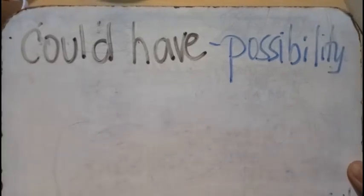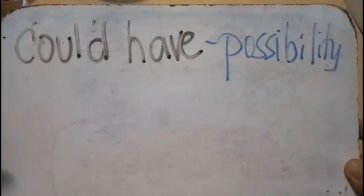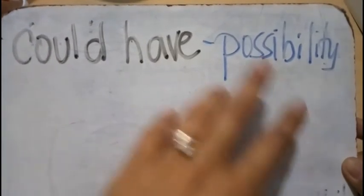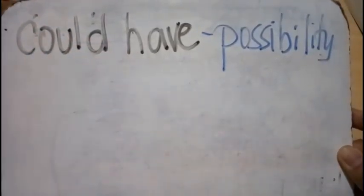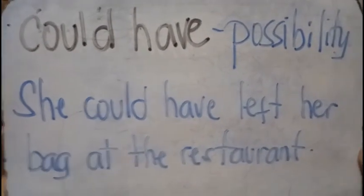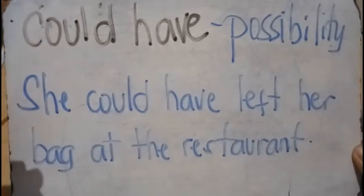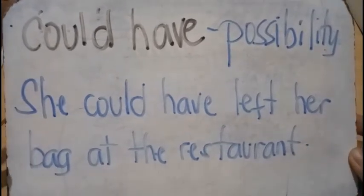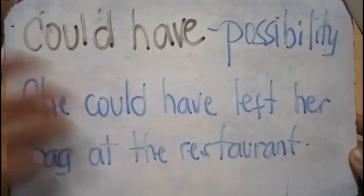The last modal is could have, and we also use it for possibility — when something could have happened in the past, but you're not sure. Example: 'She could have left her bag at the restaurant because she's not holding it anymore.' It's a possibility that could have happened. This sentence shows possibility of what could have happened.